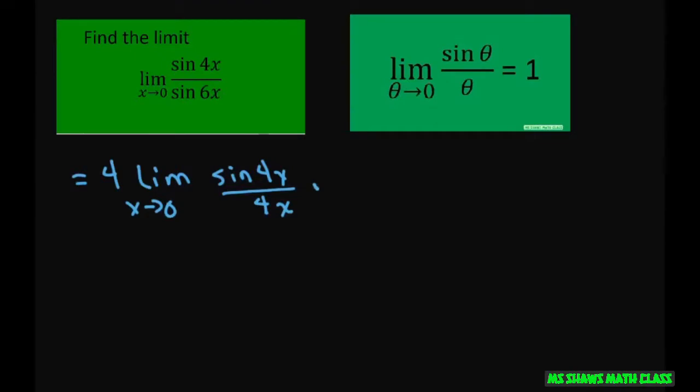And on the second one, we had, let me just write down what we had. We had the limit as X approaches 0 of 6X divided by 6 times sine of 6X. So what I'm going to do is pull out this 6. So that's 1 over 6 times the limit as X approaches 0 of 6X divided by sine of 6X.